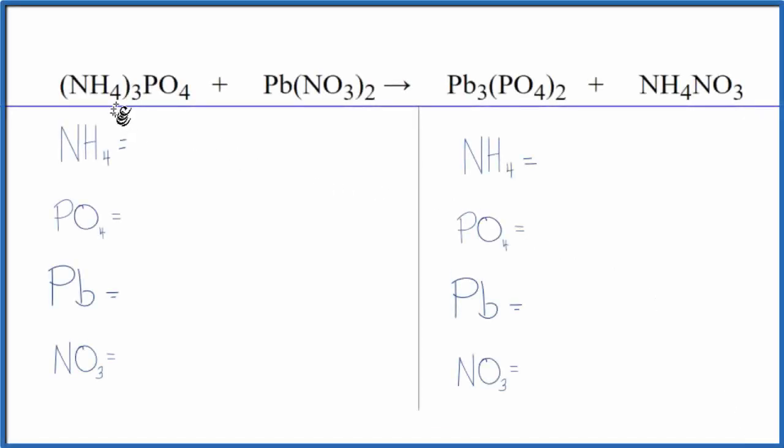In this video we'll balance the equation for ammonium phosphate plus lead two nitrate. We're going to use a bit of a trick here to make this a lot easier and you can use this on double displacement reactions.